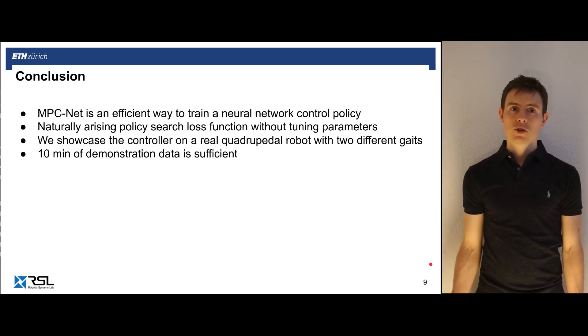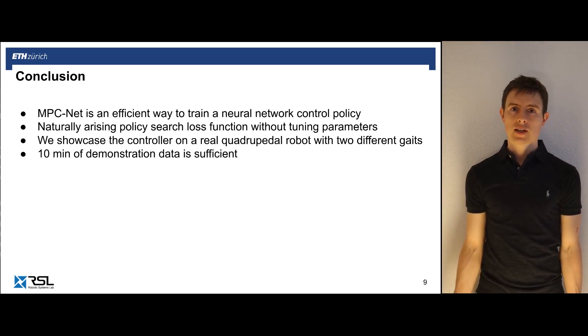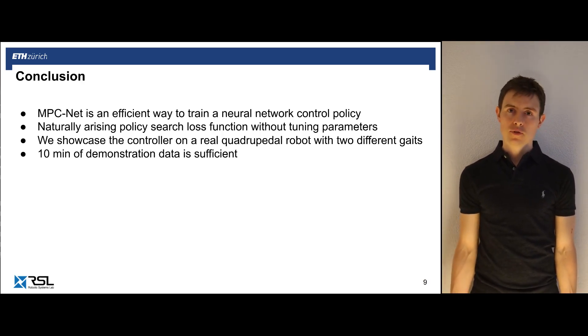In conclusion, we show that MPCNet is an efficient way to train a feedback policy from MPC demonstrations. The policy search loss function is naturally occurring and does not require any additional tuning. We showcase that this controller can stabilize a quadrupedal robot with different gaits from less than 10 minutes of demonstration data.